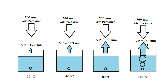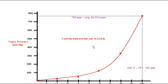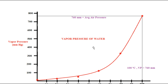But at 100 degrees, the vapor pressure of water is 760. So the bubble has inside it a pressure of 760, and the outside air pressure is also 760. This cannot collapse the bubble — and that's why when we boil water at 100 degrees Celsius we get bubbles.